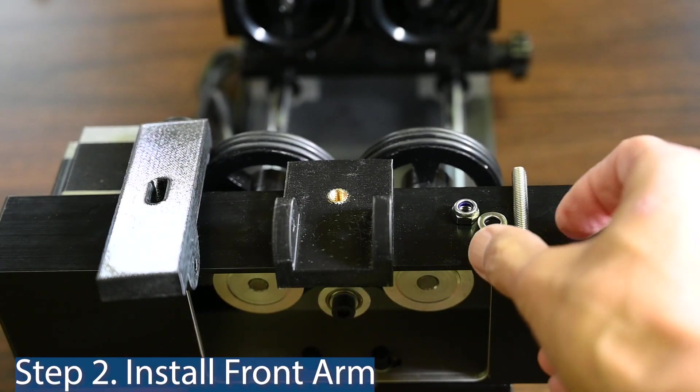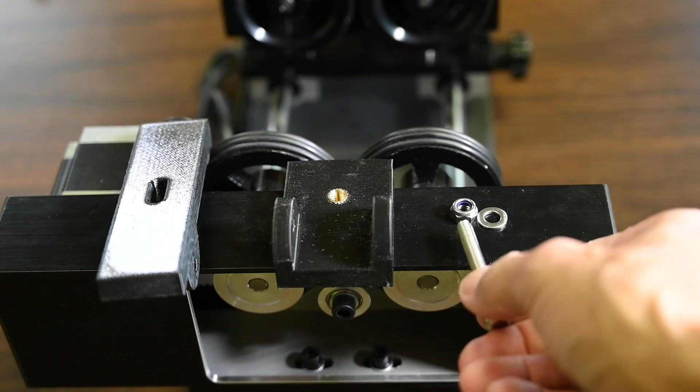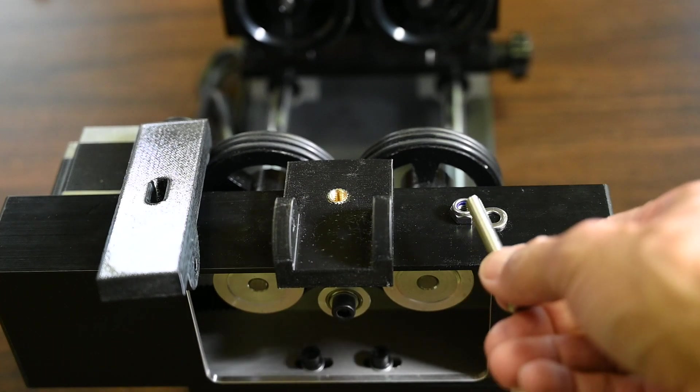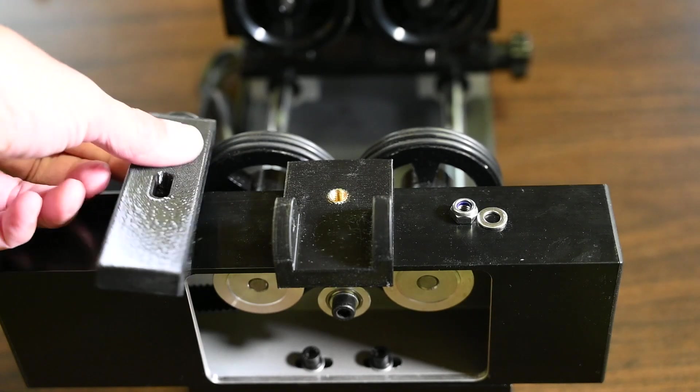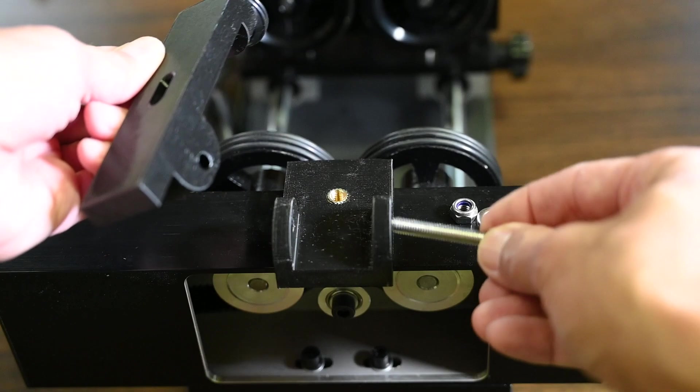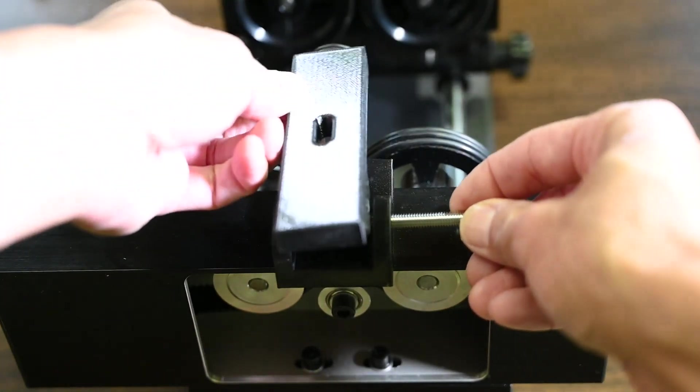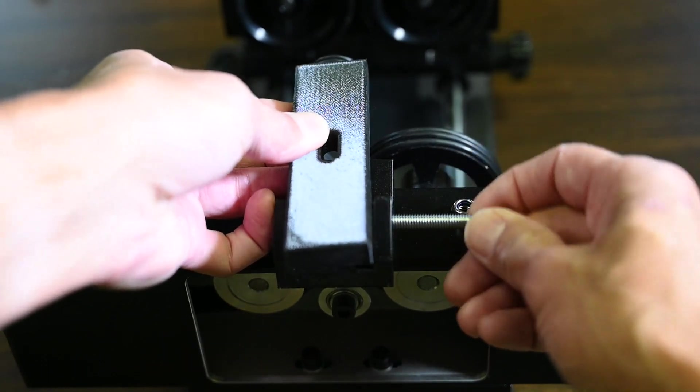In step two we are going to install this bolt, washer, and lock nut in the bag labeled step 2A to the front arm. So simply line up these holes to the holes on the side of the base plate and drive this long bolt through the holes.